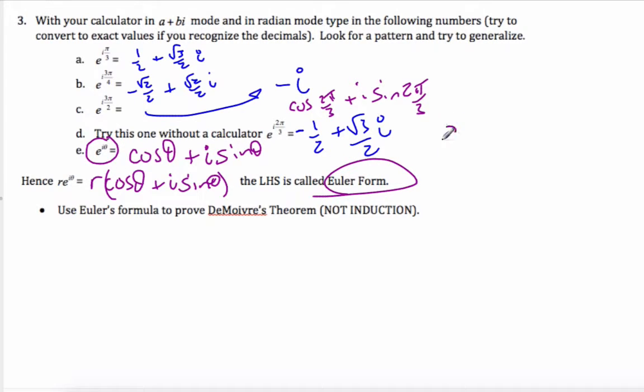So we have Cartesian form, which looks like a plus bi. We have polar or trig form, which is cis θ. And now we have e to the iθ, which is Euler's form.